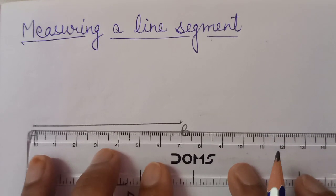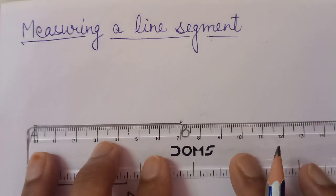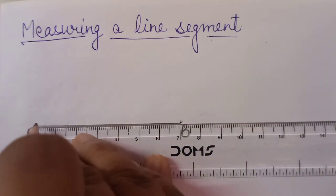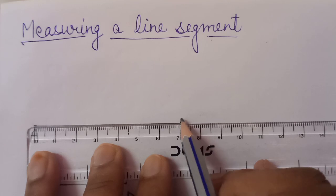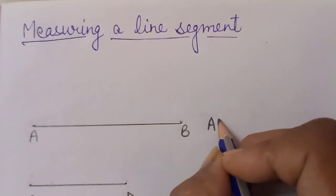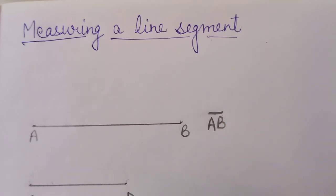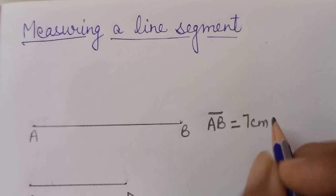Suppose we have to measure this line segment from point A to point B. Just see. We start from here and end here. This is 7 centimetre from 0 to 7. So we will write it like A, B line segment is equal to 7 centimetre.